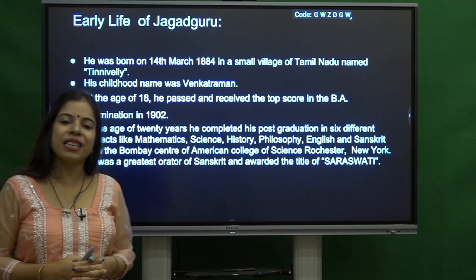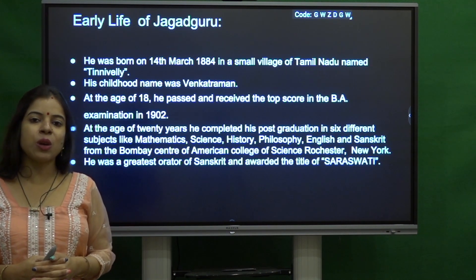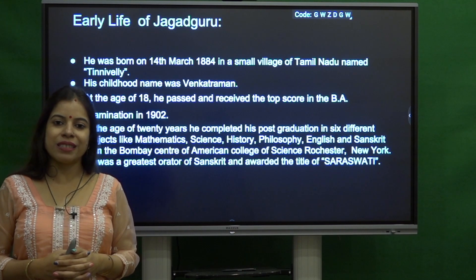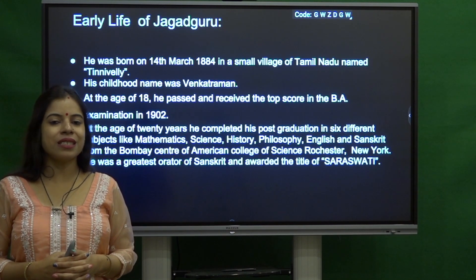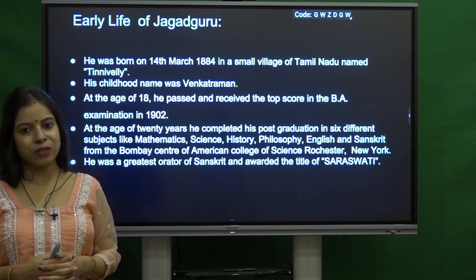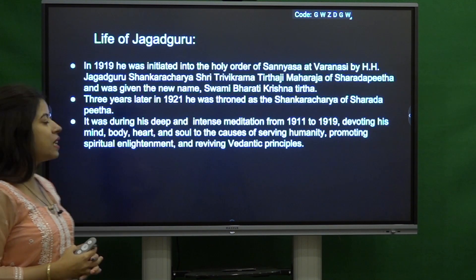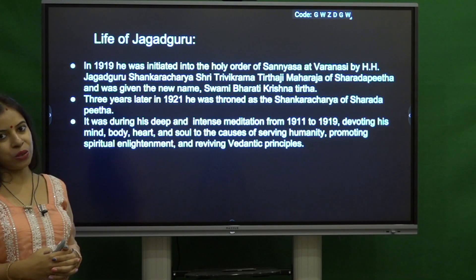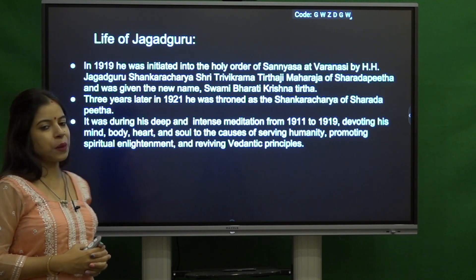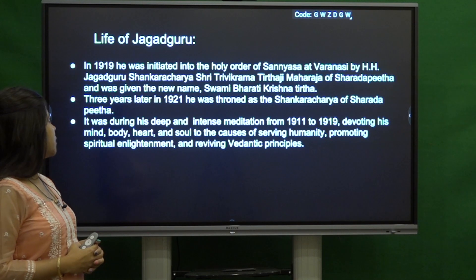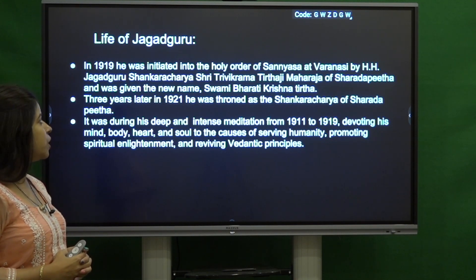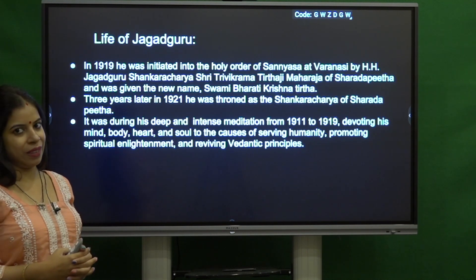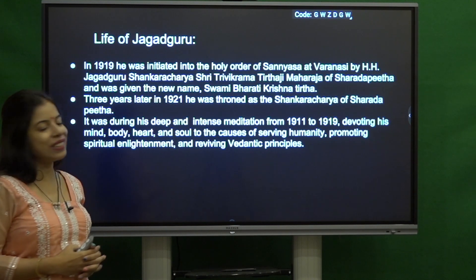He was the greatest orator of Sanskrit and was awarded the title of Saraswati due to his proficiency in Sanskrit from the Sanskrit Association of Madras. In 1919, he was initiated into the Holy Order of Sanyasa at Varanasi by H.H. Jagat Guru Shankaracharya Shri Trivekarma Tirtha Ji Maharaj, and he was given the new name Swami Bhartiya Krishna Tirtha Ji.